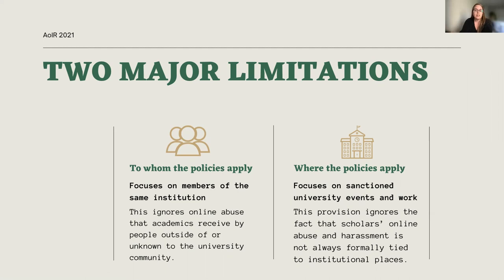The second limitation comes from where policies apply. In the policies we examined, the ones that define their scope in relation to place typically limit covered instances of abuse to places such as sanctioned university events and events directly related to work and study. This provision ignores the fact that the abuse scholars receive online is not always formally tied to institutional places and formal academic duties. So defining harassment policies in terms of university personnel or spaces excludes acts of online abuse that occur outside of institutionally sanctioned platforms such as social media and outside formally recognized academic labor, like appearing on podcasts, on TV or radio, and by individuals who are not members of the institution's community, which are most of the people we interact with in online spaces.